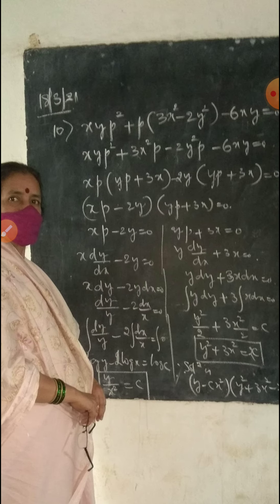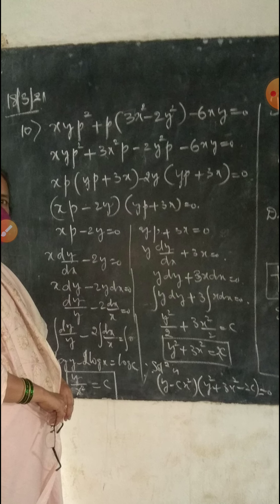XYP² + P(3X² - 2Y²) - XY = 0. Rearranging: XYP² + 3X²P - 2Y²P - 6XY = 0. Taking XP common, we get: YP + 3X minus 2Y into YP + 3X equals 0.